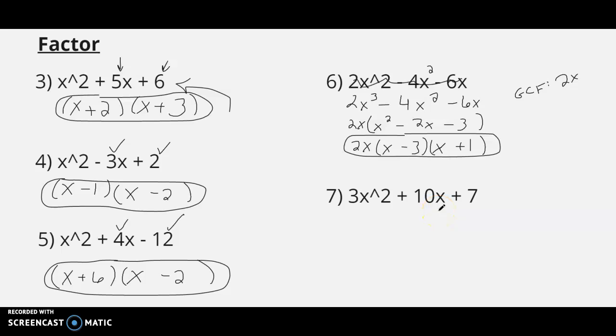Alright, number 7 here. This is what we call the AC method, with our A and our C number. If we take A times C, we get 21. And the question we ask ourselves, what factors of 21 add up to 10? So we'll set up, it's not the final answer, but it's sort of a setup as we work through the problem, x and x. Factors of 21 that add up to 10 would be 3 and 7. So we do, and that's our next step. Put a plus 3 and a plus 7.